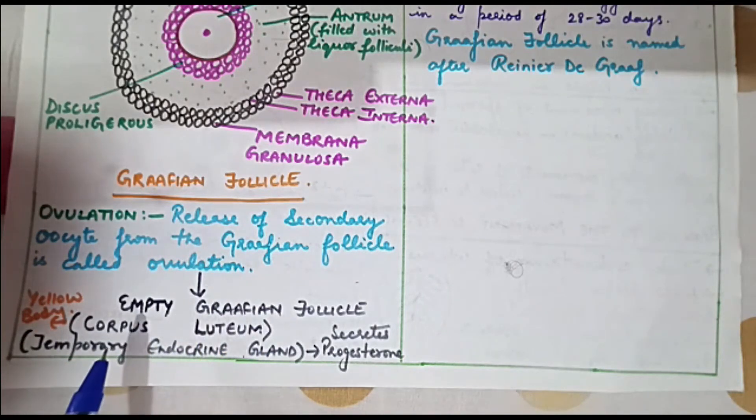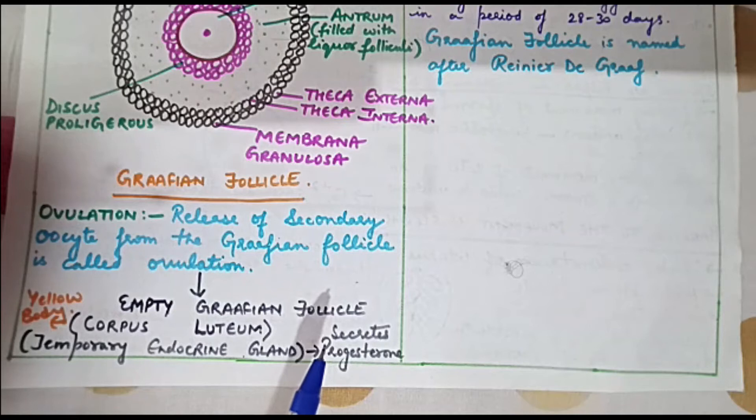This corpus luteum which acts as a temporary endocrine gland must secrete some hormone. The hormone which is secreted by corpus luteum is progesterone.